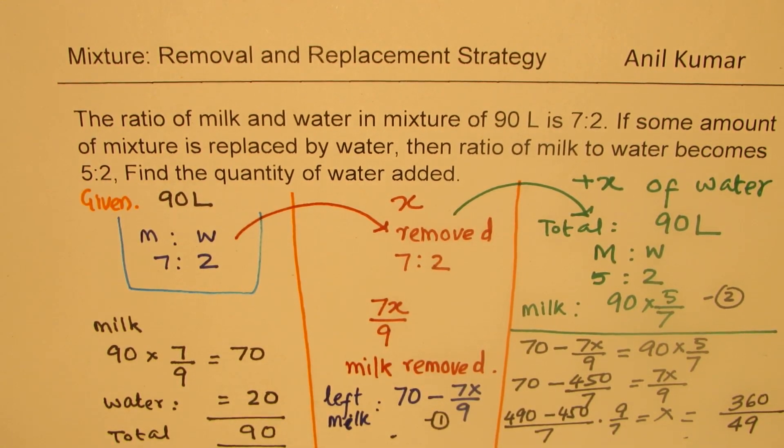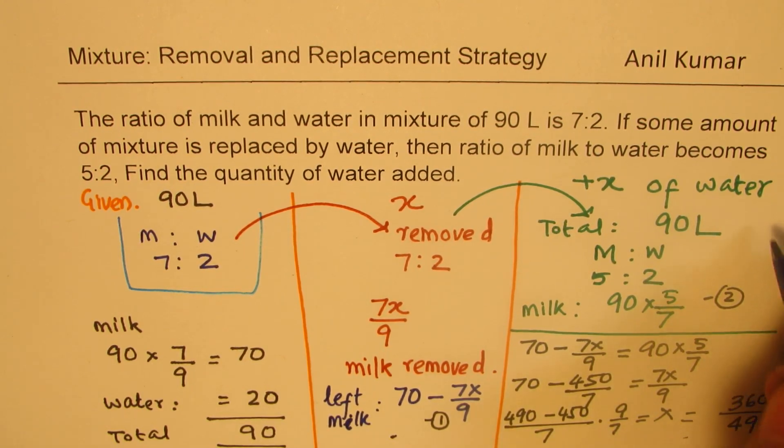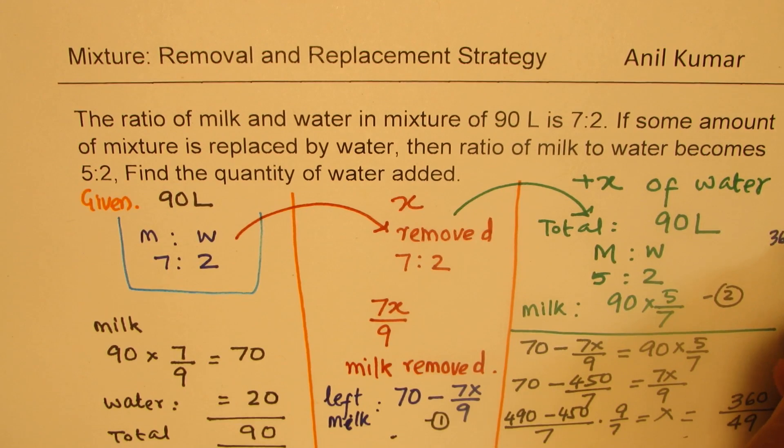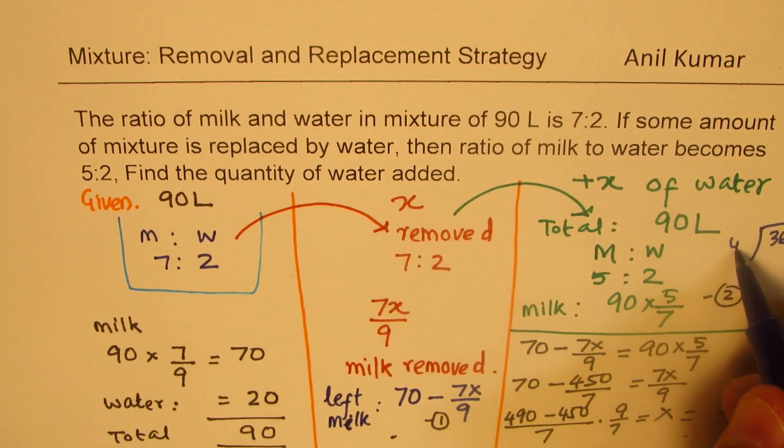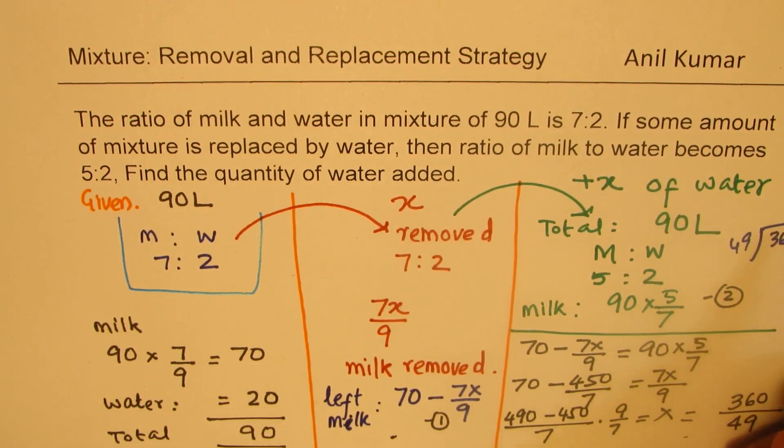You can actually divide this and write it in the form of a mixed number. So let's do it on the side. We have 360 divided by 49. So that will go 7 times, 7 times 9 is 63.